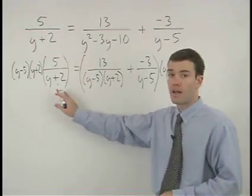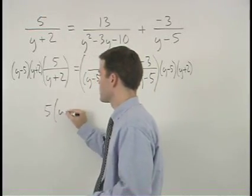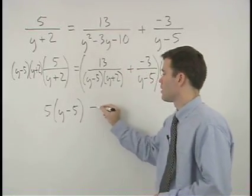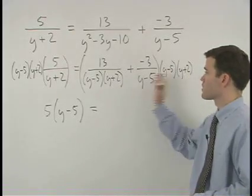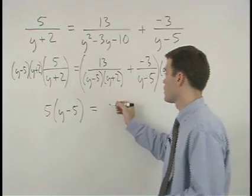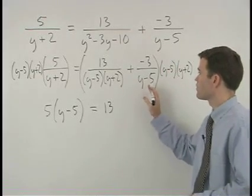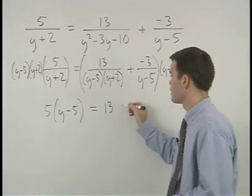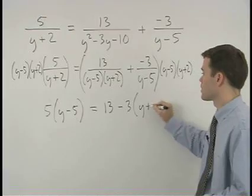On the left, the y plus two's cancel so we have five times parentheses y minus five. On the right, in the first fraction the denominator cancels out entirely so we have thirteen, and in the second fraction the y minus fives cancel so we have minus three times parentheses y plus two.